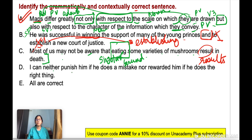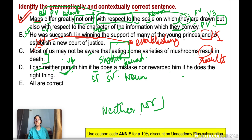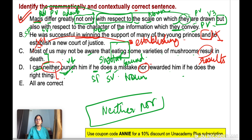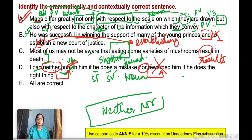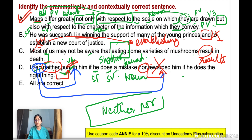Option D: 'I can neither punish him if he does a mistake, nor reward him.' With 'neither...nor,' parallelism must be maintained. After 'neither' you have V1 ('punish'), so after 'nor' you also need V1. Because a modal ('can') has been used — can + V1 — you use 'can + punish' and 'can + reward.' So you have to use V1 'reward' here, which is correct.